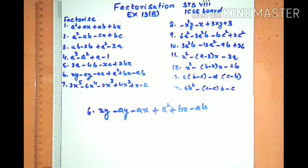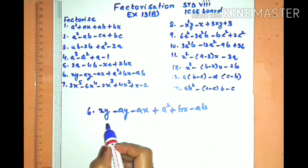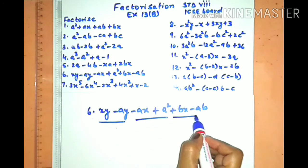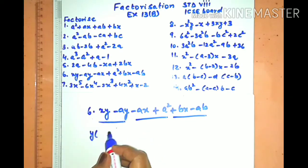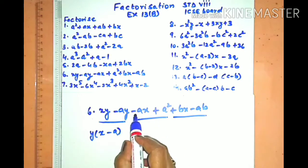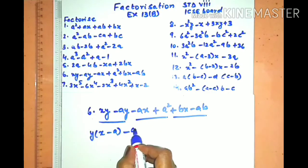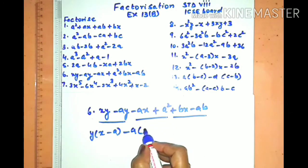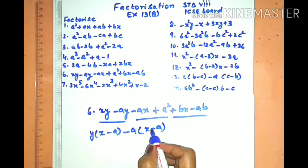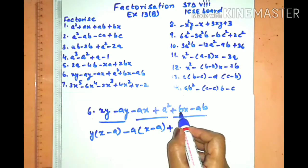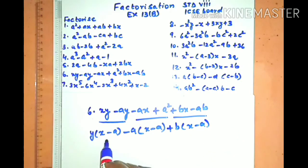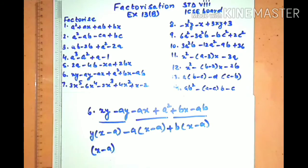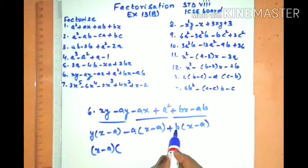Sum number six has six terms. We will make three pairs. In the first pair, y is common with (x − a) in the bracket. In the second pair, we have minus and plus, so we take out minus a as common and get (x − a) in the bracket. In the third pair, b is common, giving (x − a) in the bracket. All three terms now have (x − a) as a common factor, and the remaining bracket is (y − a + b).